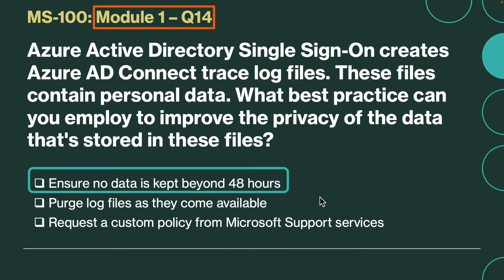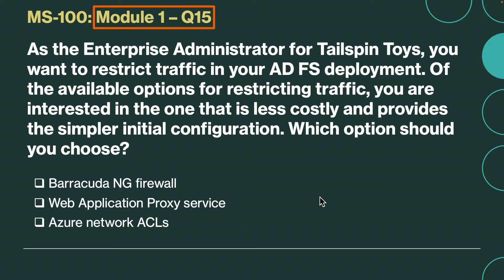Question number 15. As the enterprise administrator for Tailspin Toys, you want to restrict traffic in your ADFS deployment. Of the available options for restricting traffic, you are interested in the one that is less costly and provides the simpler initial configuration. Which option should you choose? Is it a Barracuda NG firewall, web application proxy service, or Azure network ACLs? The correct answer is Azure network ACLs, or access control list. The major advantage to using this option is that it's less costly and has a simple initial configuration.